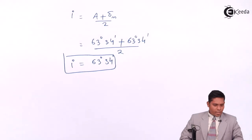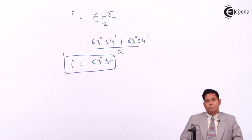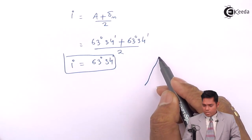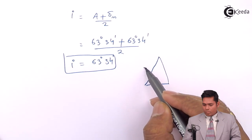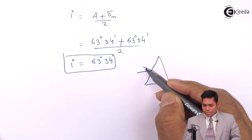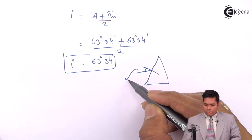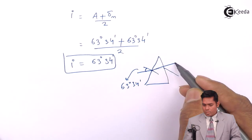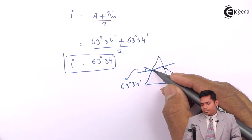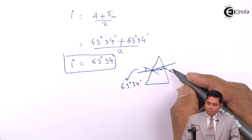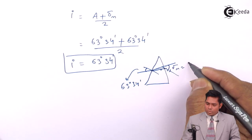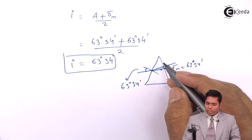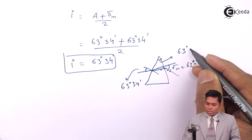The value of I, the value of A, and the value of Delta M are found to be the same in this case. The angle of incidence is 63 degrees 34 minutes, the angle of minimum deviation is also 63 degrees 34 minutes, and the angle of prism is also 63 degrees 34 minutes.